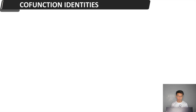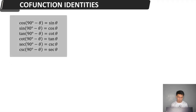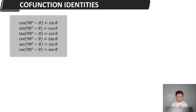We have 6 formulas for co-function identities. Number 1: cos(90° − θ) = sin θ, and sin(90° − θ) = cos θ. Tangent(90° − θ) = cotangent θ. Cotangent(90° − θ) = tangent θ. Secant(90° − θ) = cosecant θ. And cosecant(90° − θ) = secant θ. These identities hold for any angle for which the functions are defined. The 90 degrees can be replaced by π/2 when working in radians.